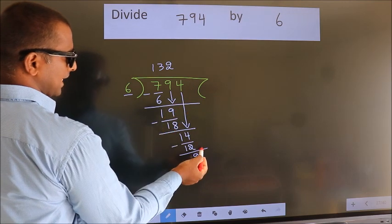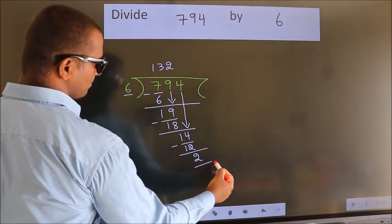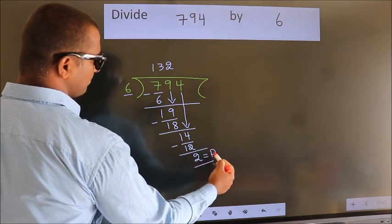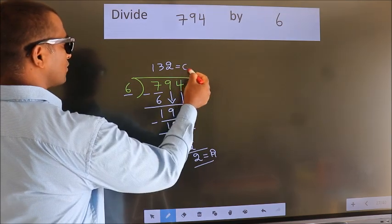No more numbers to bring down, so we stop here. This is our remainder. This is our quotient.